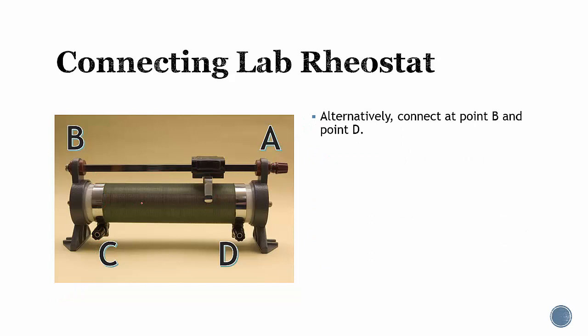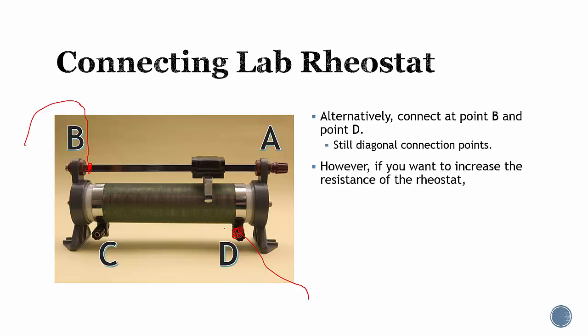Alternatively, you can connect point B and D. Connect a wire to the metal here, and another at D. You have two wires that connect to other components. Still diagonal. However, in this case, if you want to increase the resistance of the rheostat, push the slider towards the left. To reduce the resistance to zero, push the slider to the right.